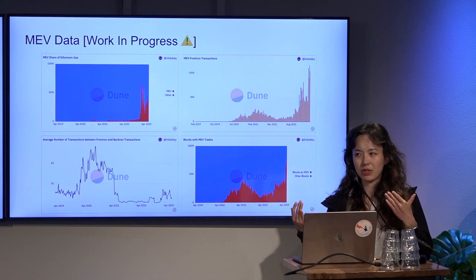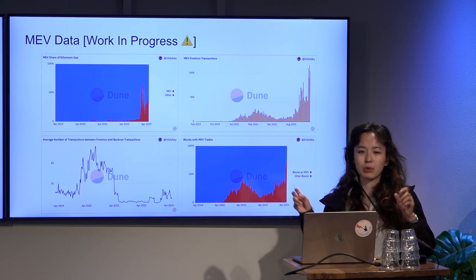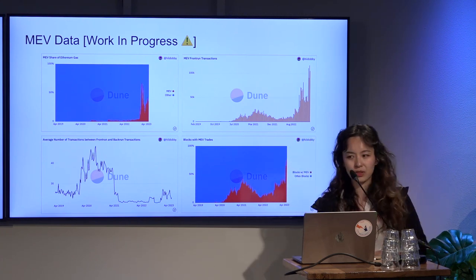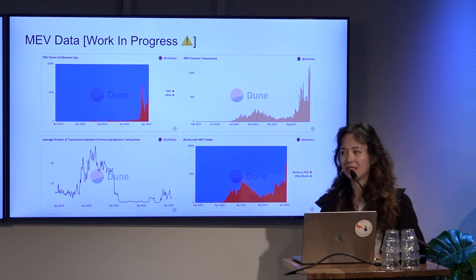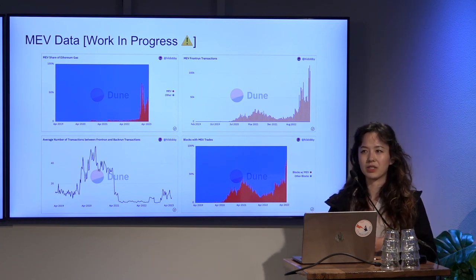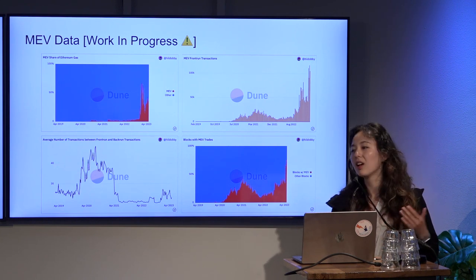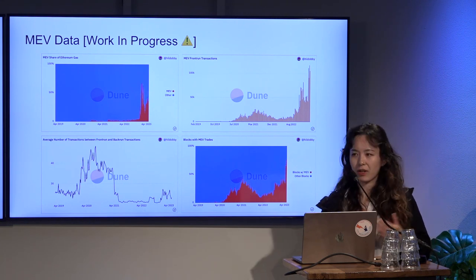Your position in the line is decided by your gas price — that's basically the whole gas auction design of Ethereum as a layer one. But then there are people who have privileged knowledge. For example, if they are looking at the public mempool, which normal users can't easily do unless they're running a node, they will spot a fat trade on a meme coin where the liquidity distribution is very spiky.